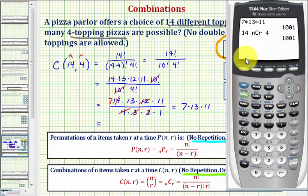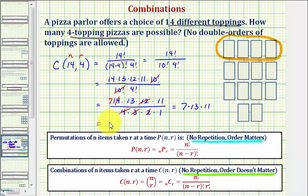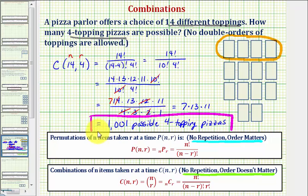And of course, the result is the same. There are 1001 possible four topping pizzas. I hope you found this helpful.